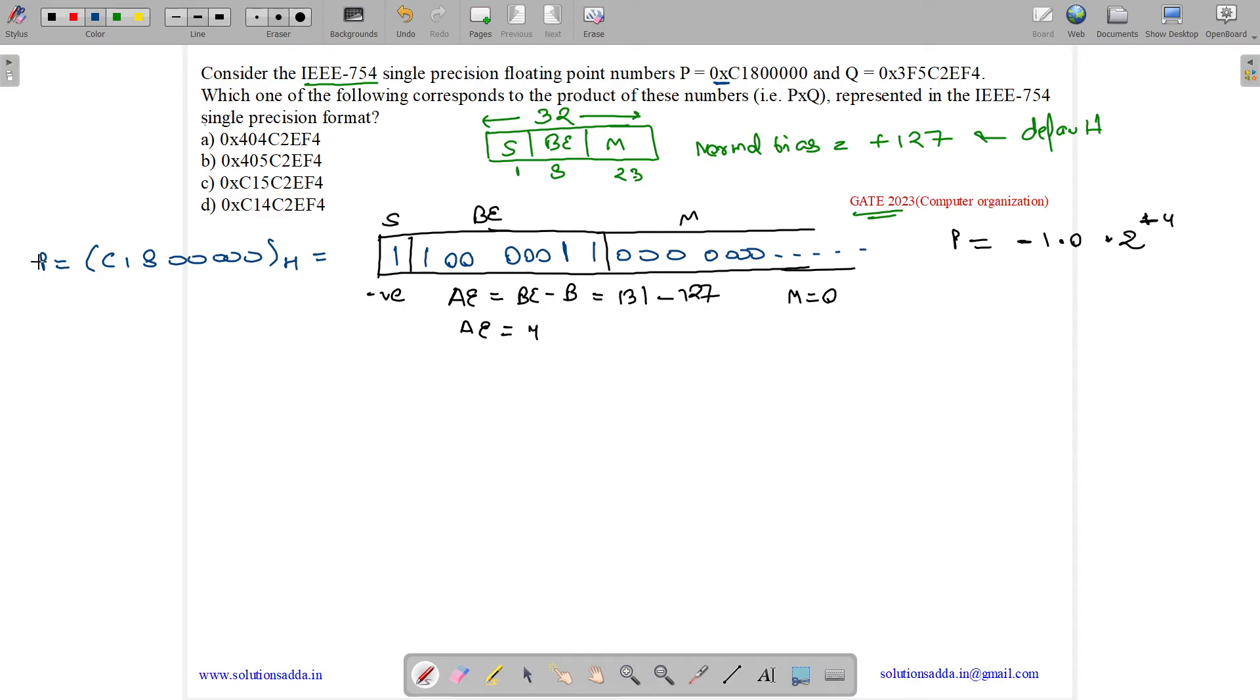Now let's do the same thing for number Q. Q is 3F5C2EF4, given in hexadecimal format. Let's convert it into binary format.